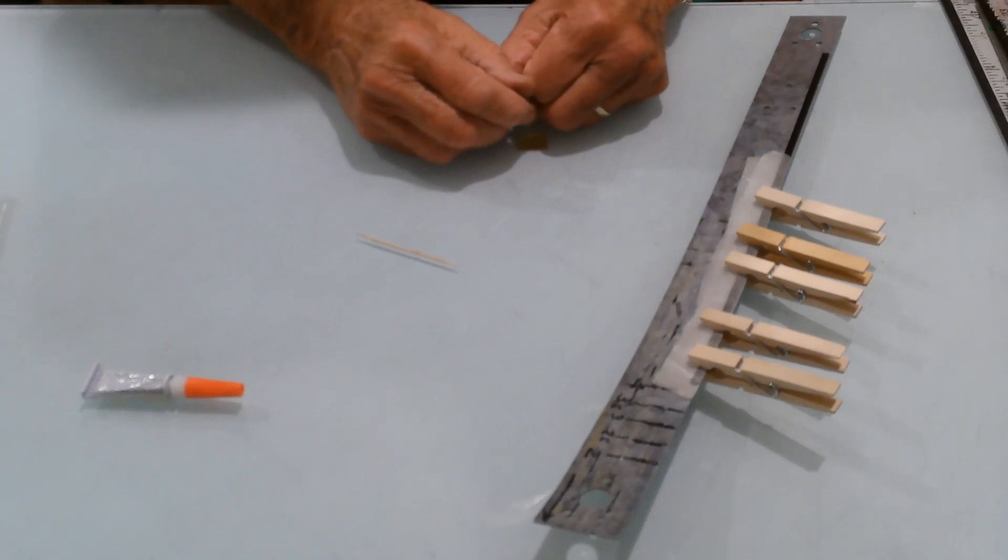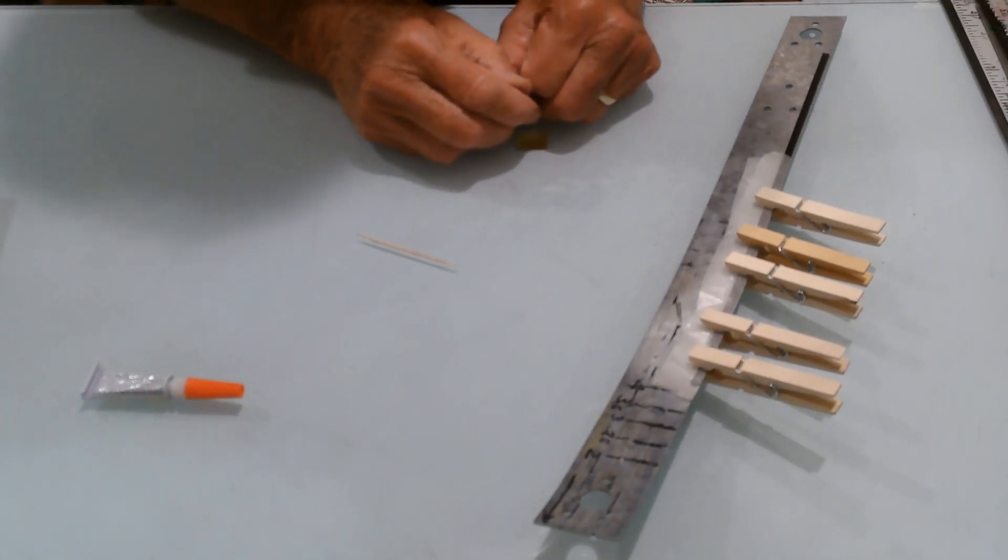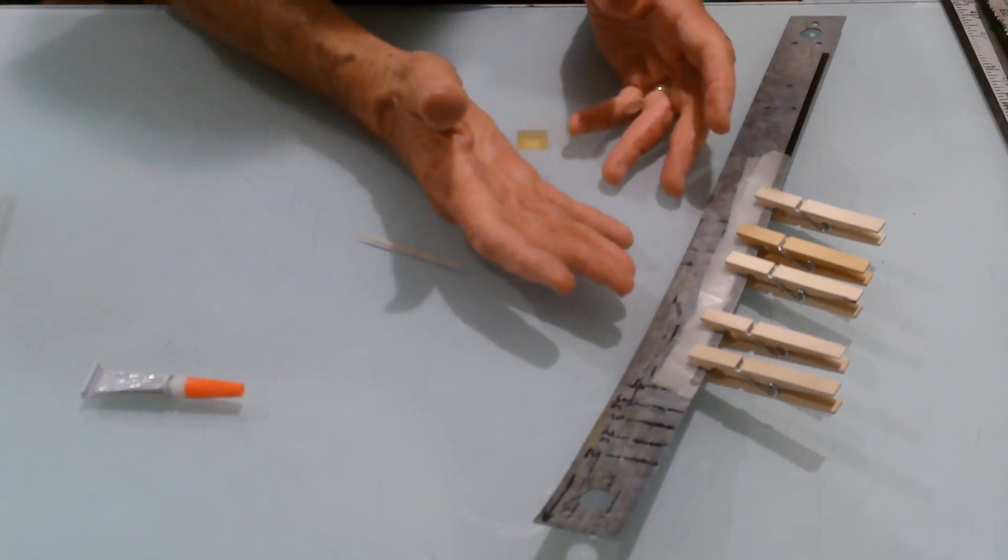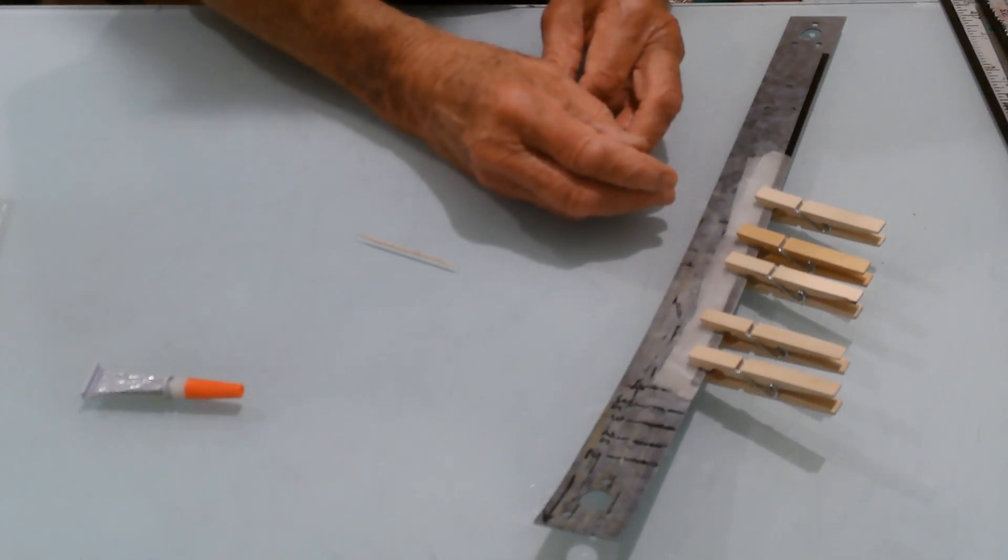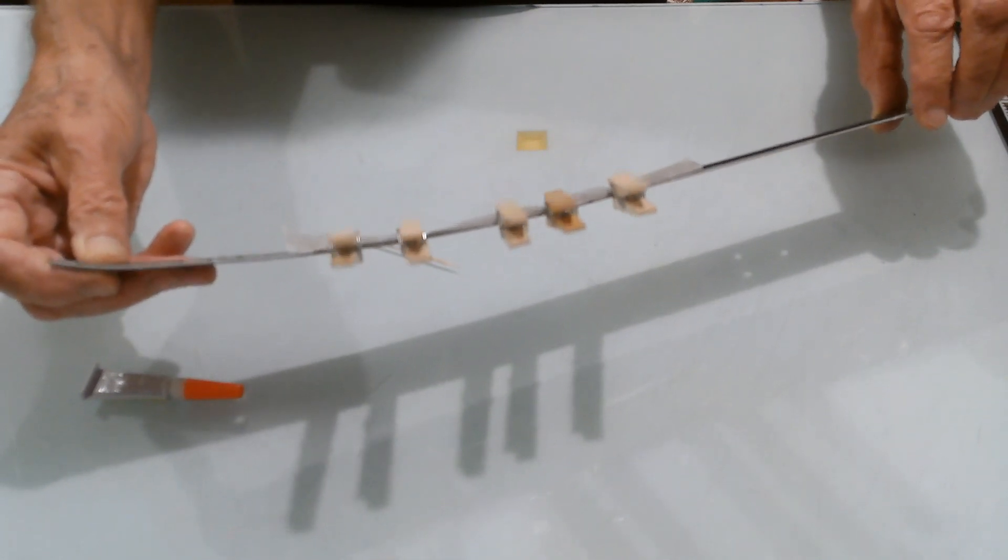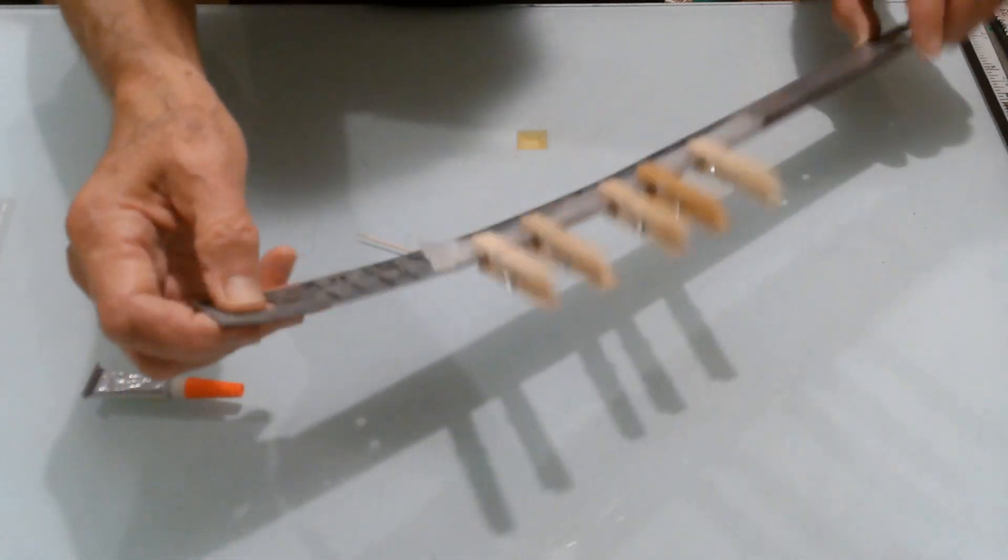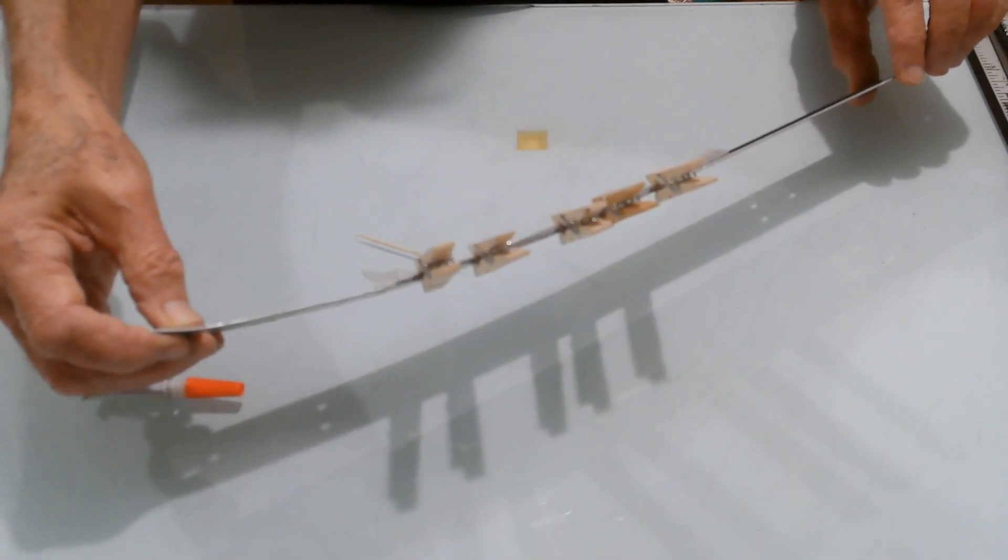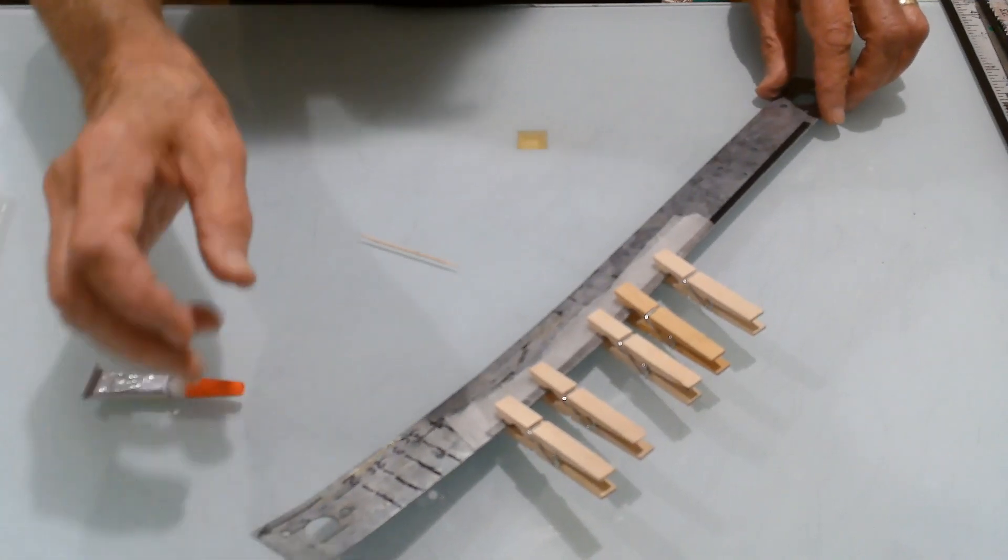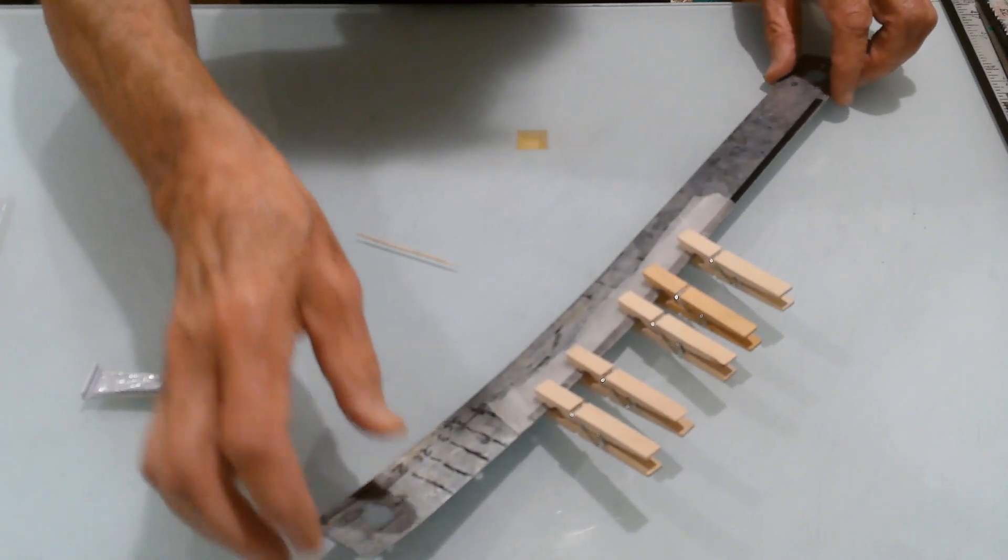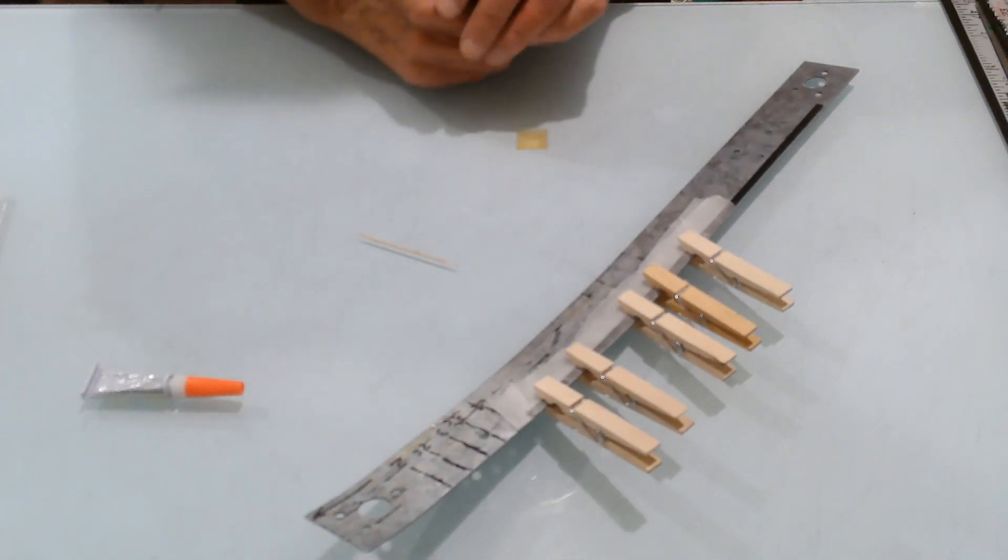Now, when this dries, which won't take too long, I'll unclamp it, take the wax paper off. But the amount of bend, even though this is the amount of bend that I'm gluing, like laminating the two separated parts of the carbon together again, I'm doing it with this kind of a shape.